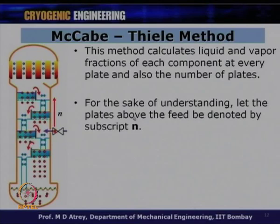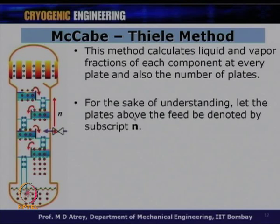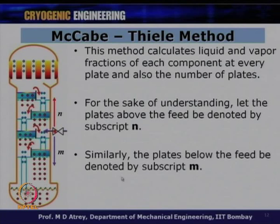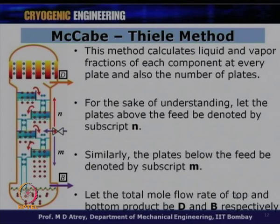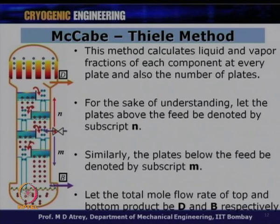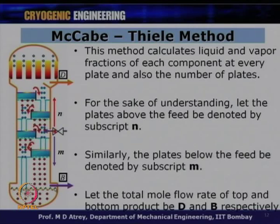Let the plates above the feed — the enriching section — be labeled N, and the plates below the feed — the stripping section — be labeled M. Let the total molar flow rates of the top and bottom products be D and B respectively. We receive D moles per unit time at the top (low boiling component) and B moles per unit time at the bottom (high boiling component).